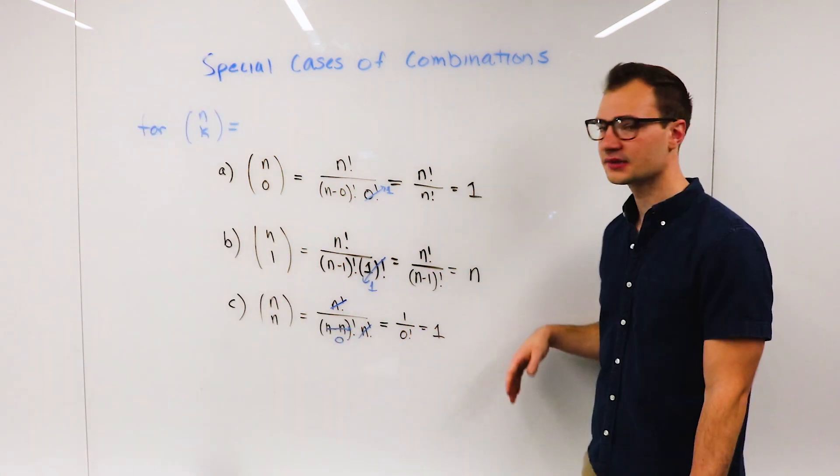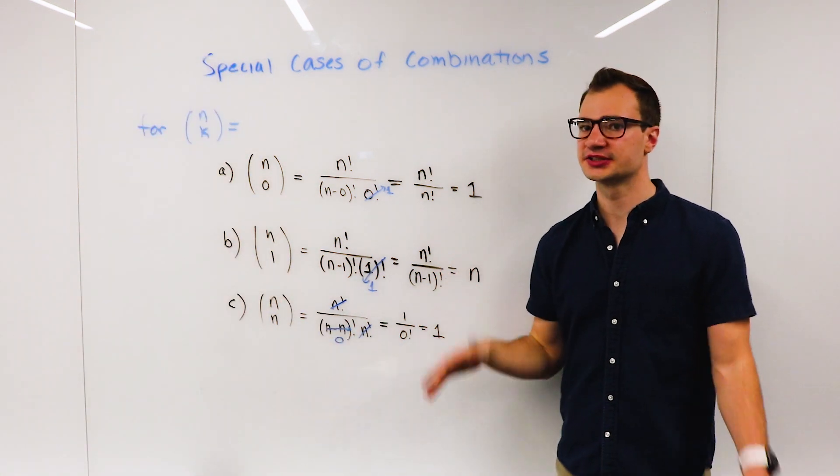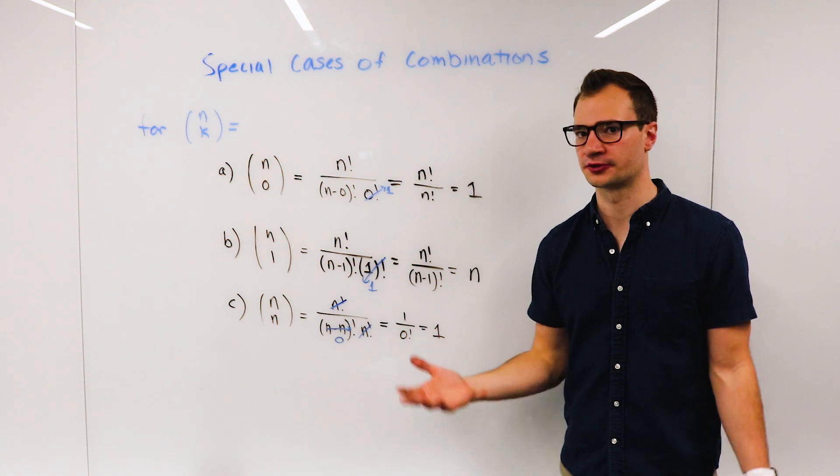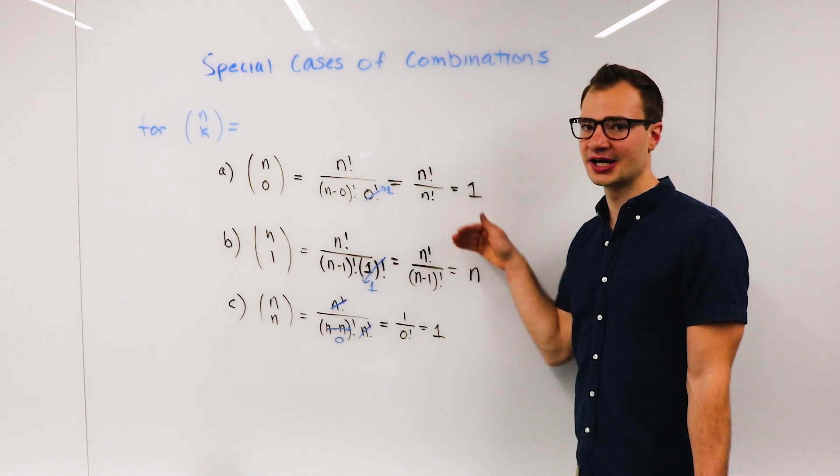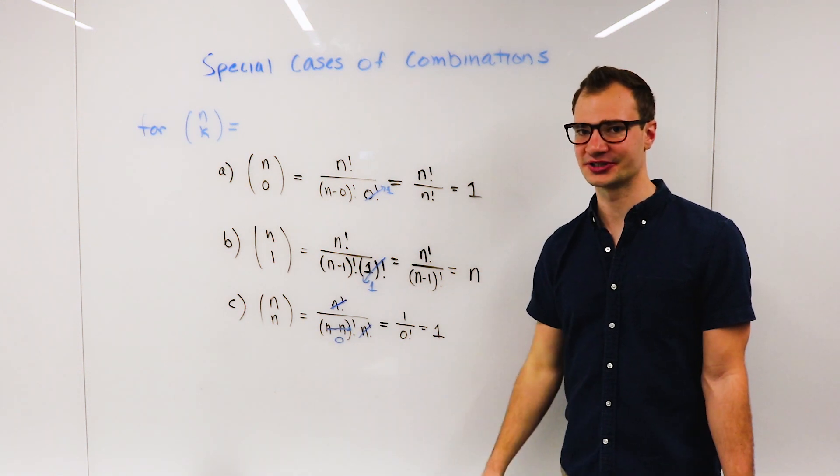And so these are three special cases of combinations or factorial arrangements that you can recognize, and you don't have to get tripped up on when you see them on a test.